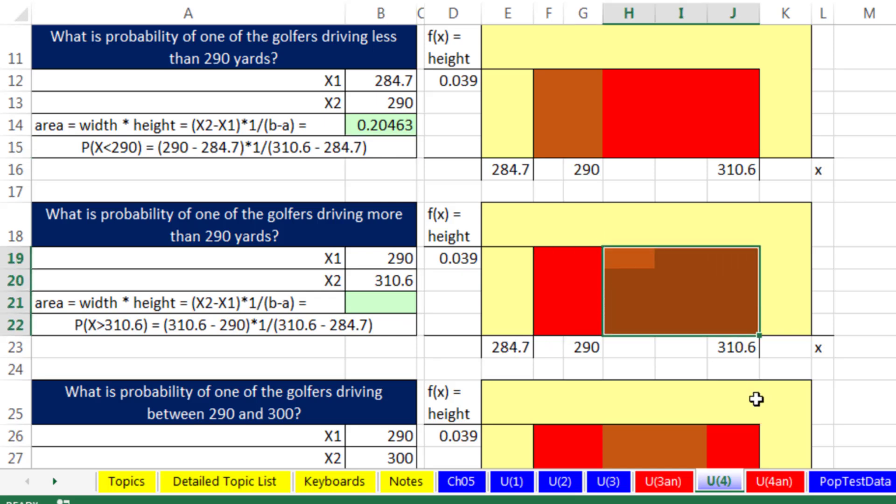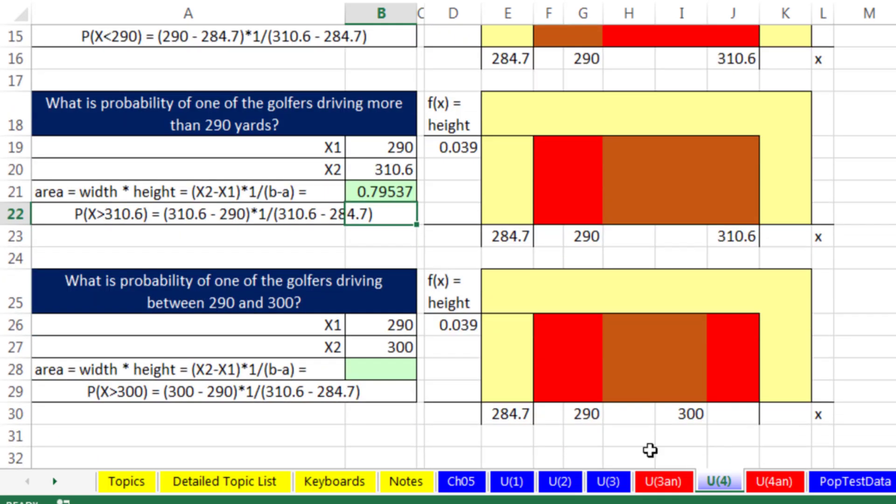Now what about this area right here? I want to calculate the probability that we drive between 290 and 310.6 equals the height times the width. And I'm going to do it over here even though I have it so close right there. I somehow feel more comfortable going that is the width. That is the height. And enter. So the probability that we would drive between about 310 and 290, 80% almost. And finally, we want to calculate the probability between 290 and 300 equals the height times the width. 300 minus 290, that ought to be about 10 yards. So the probability that we would drive between those two points, about 38 or 39%.